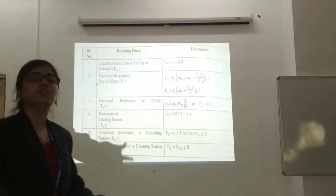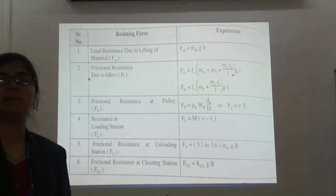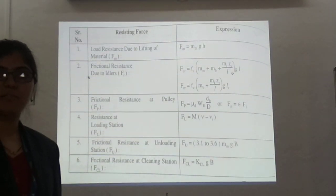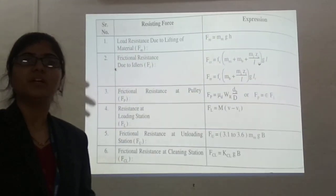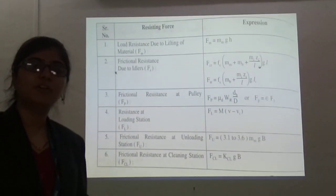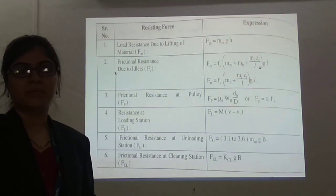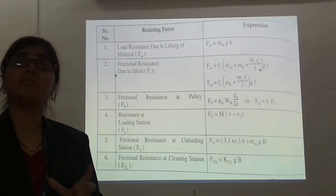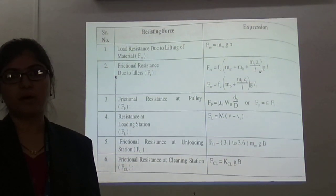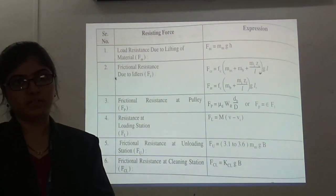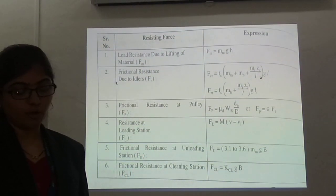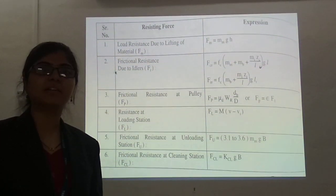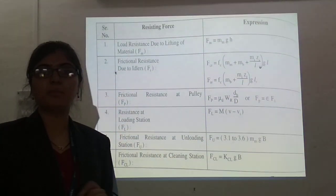We have used various elements in the belt conveyor system such as the snub pulley, idlers, belt tensioning devices, head pulley, and tail pulley. Because of these devices, they will offer frictional resistance to the belt. If we don't consider this frictional resistance in the calculation of output power, we will calculate the wrong output power and ultimately select the wrong motor to drive the belt. Hence we should consider the frictional resistance to select the correct motor power.